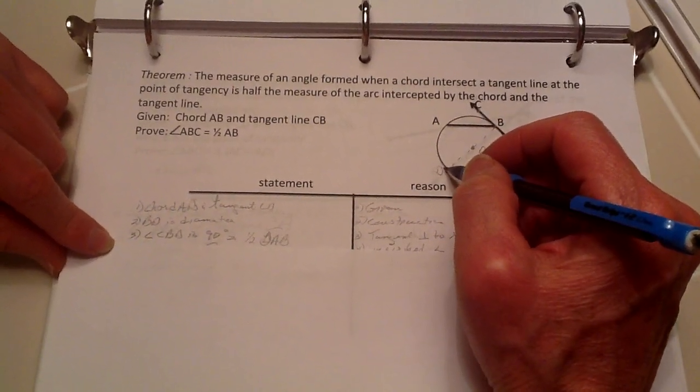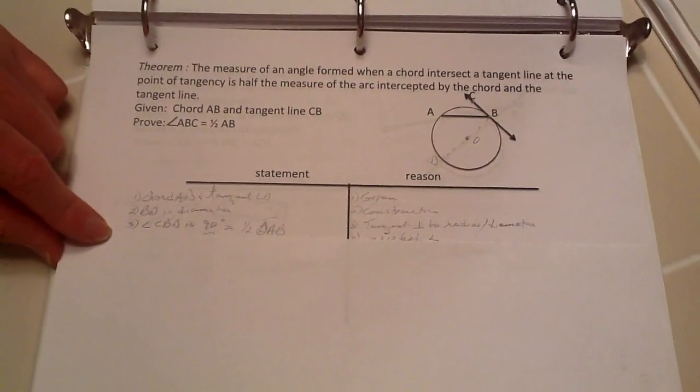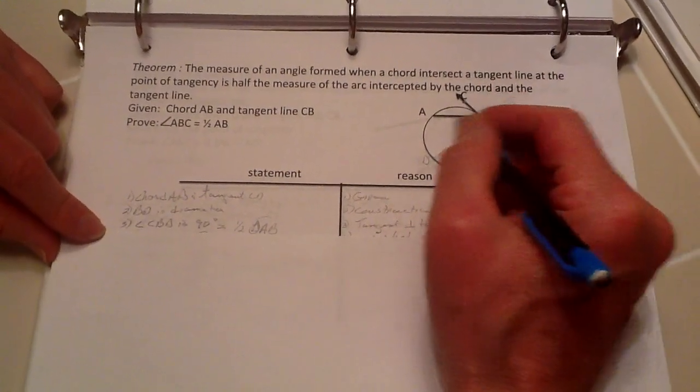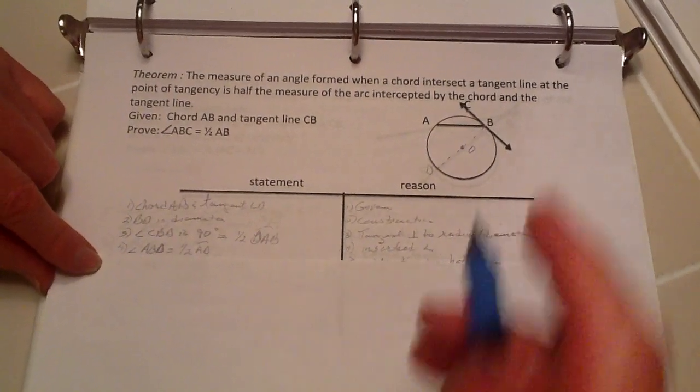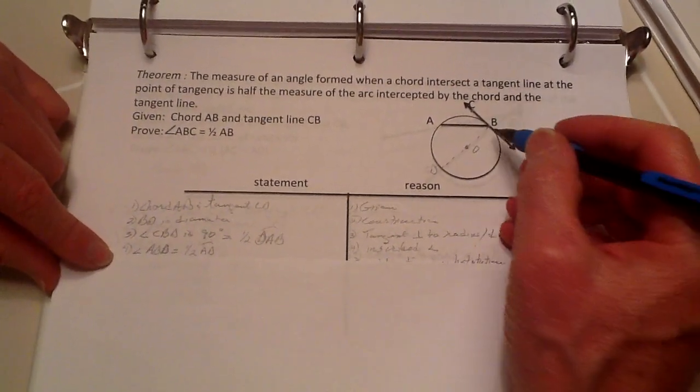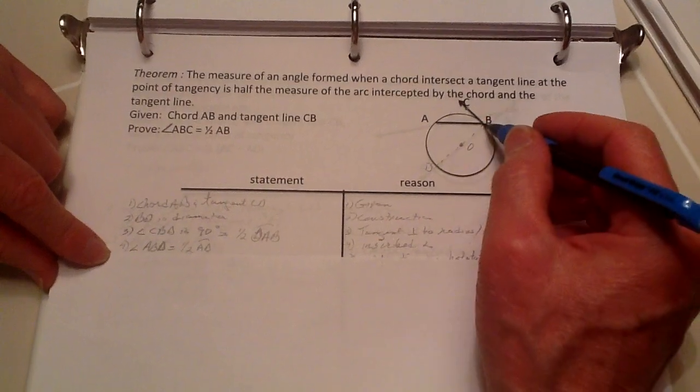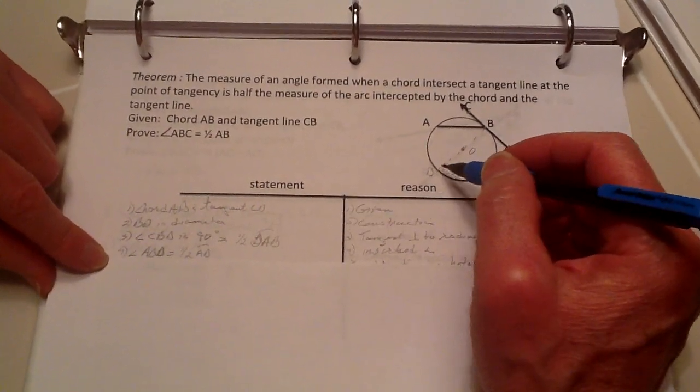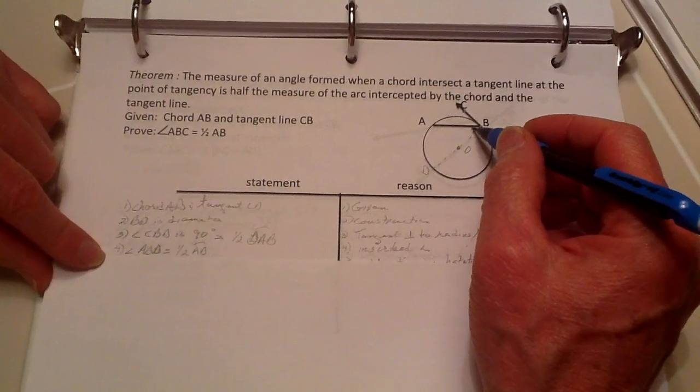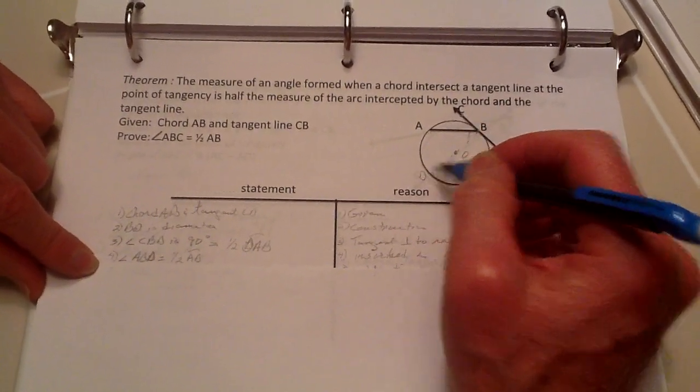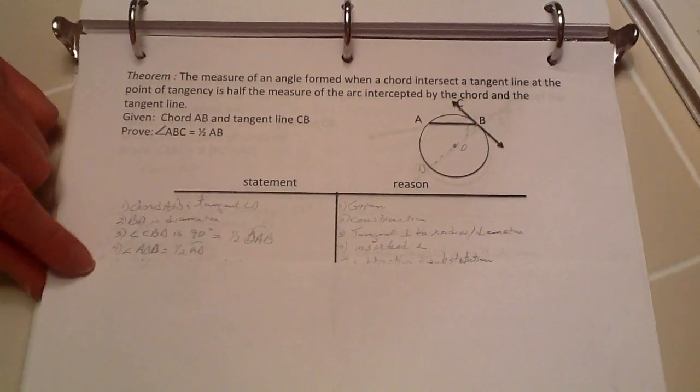This angle right here is going to be one half of that arc. And likewise we know that the angle here of ABD is equal to one half of this arc, this angle right here is equal to one half of this arc here, because that's the inscribed angle theorem.